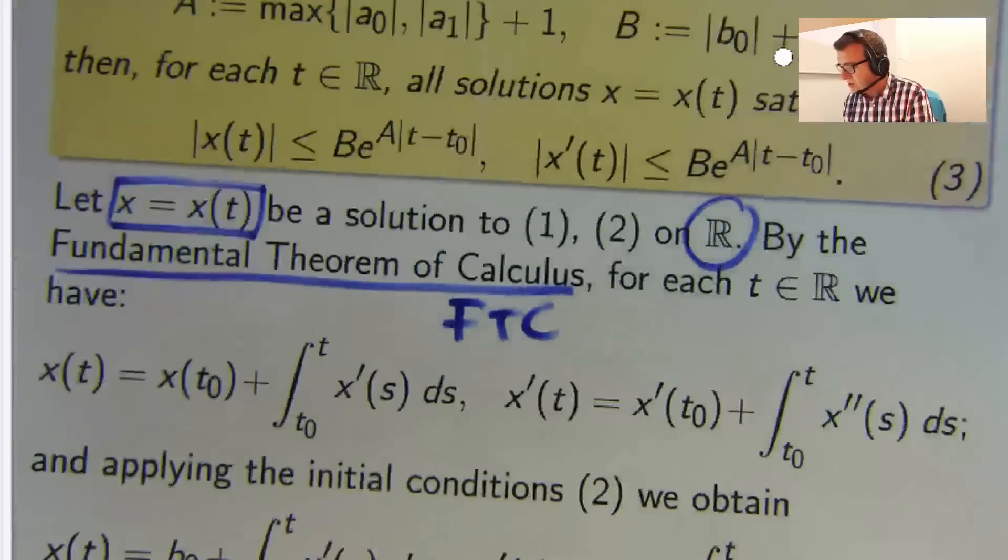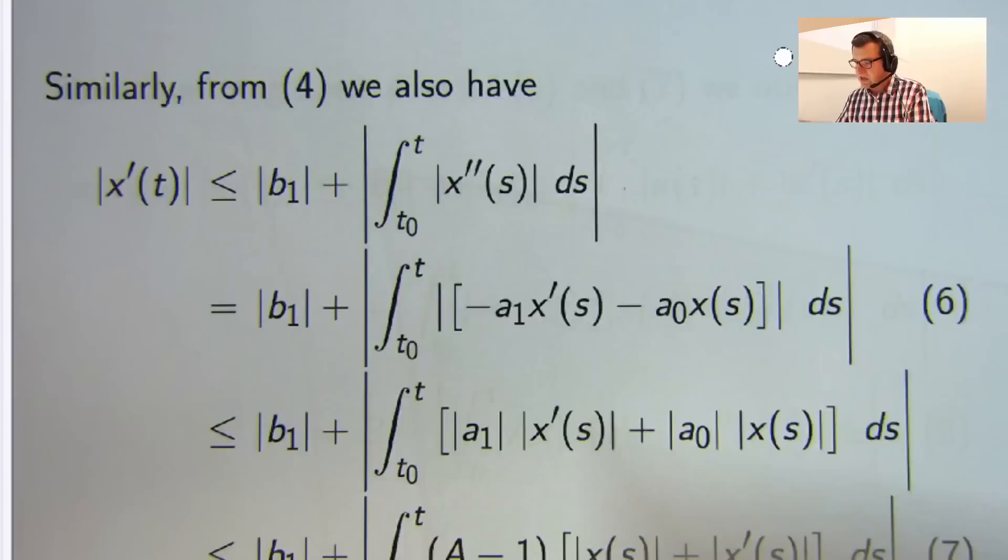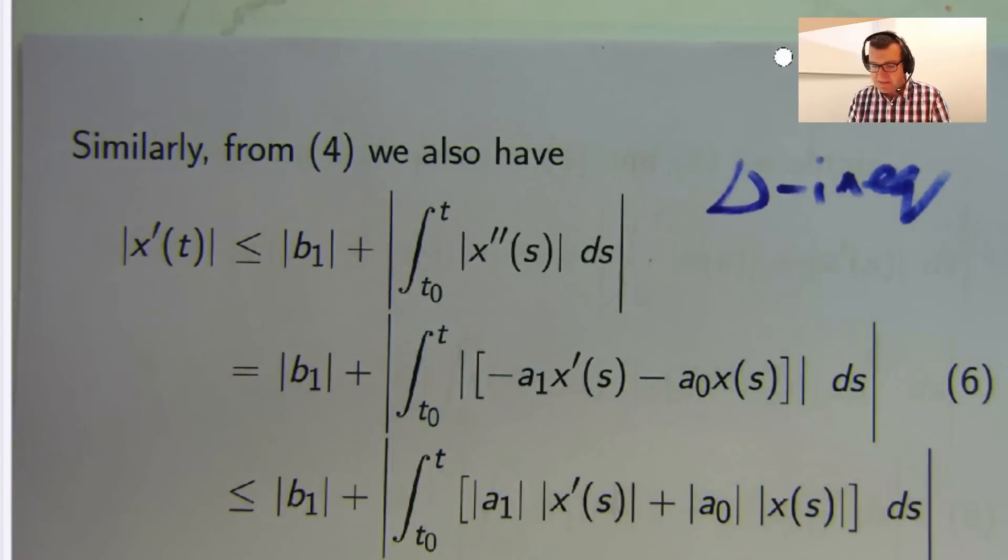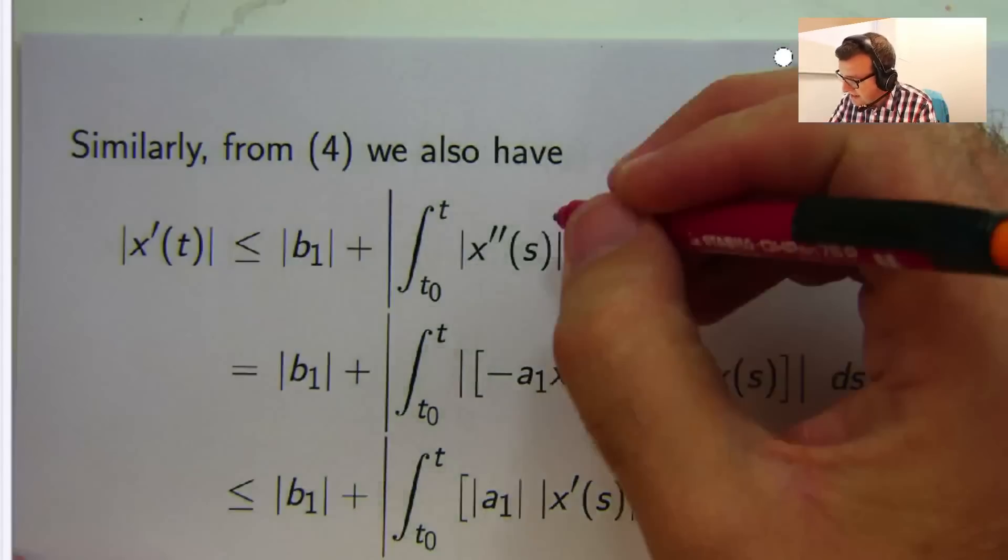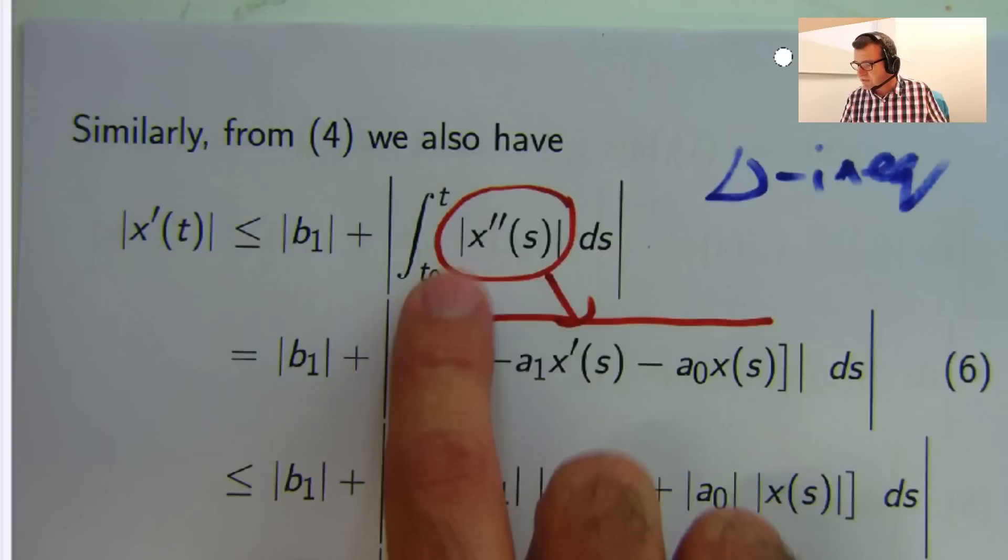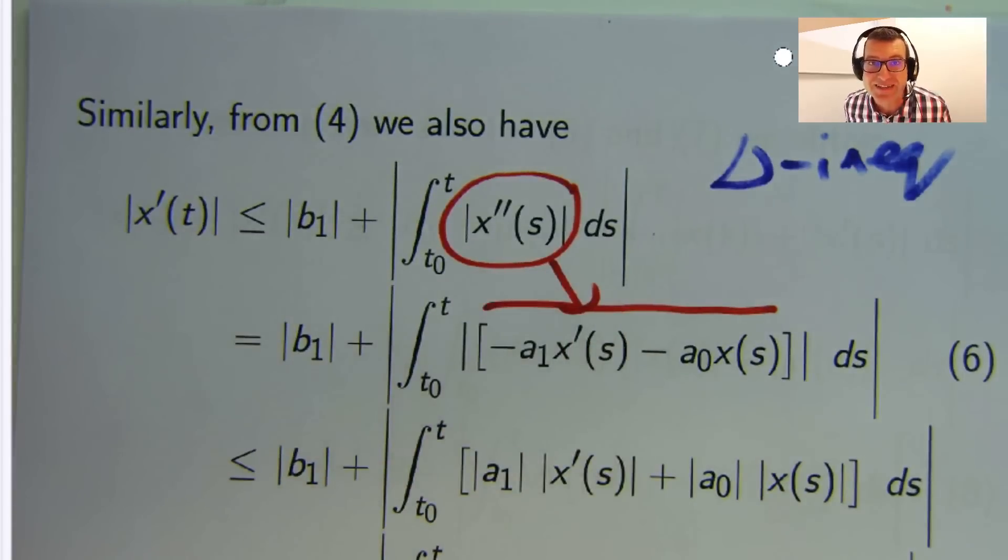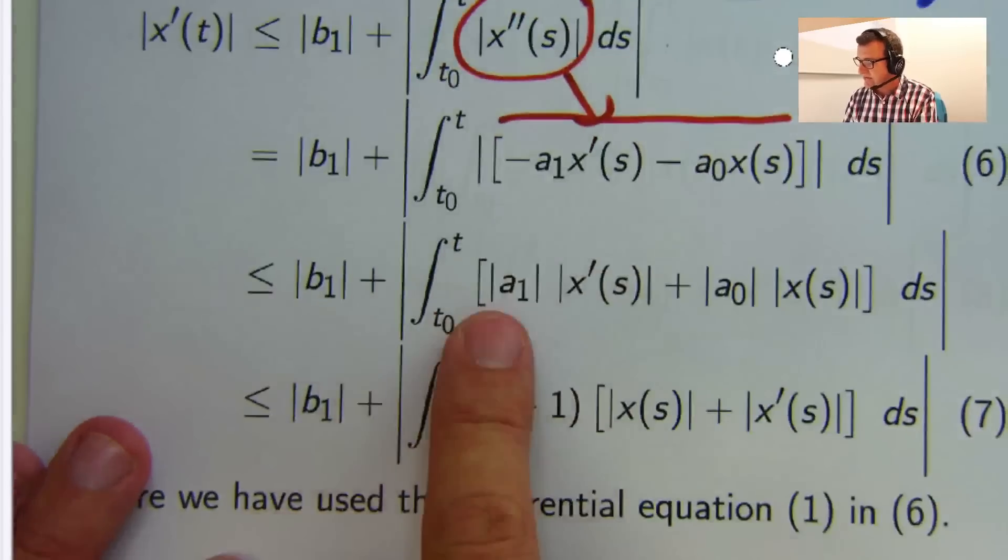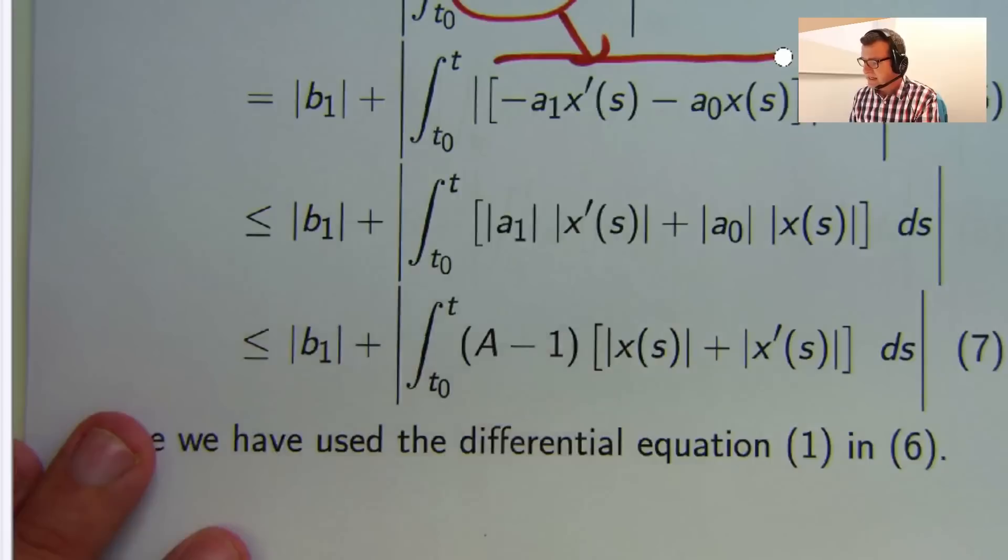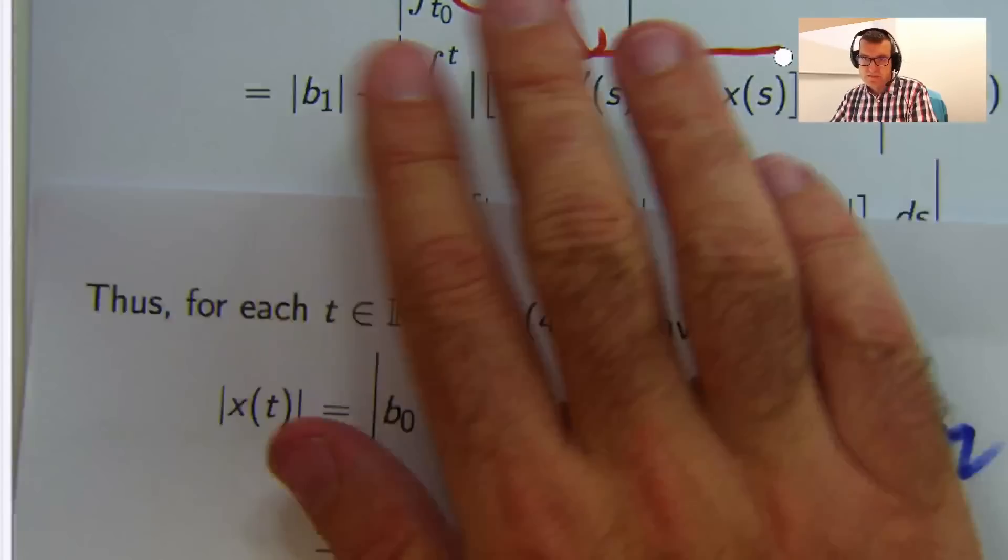Similarly, we can now work with the x prime integral equation in exactly the same way. Very similarly, again, by using the triangle inequality, we can do exactly the same thing. Now there is one difference here. What we've done is replace this using the differential equation. So basically x double prime, you can rearrange equation (1) and put these things on the other side and then replace x double prime with that. Because remember, x is a solution to (1), (2). So we do that, form an inequality again. And because of the nice way that we defined big A, we can form this inequality here. So we have two inequalities on x and x prime. We're going to add these two inequalities, both sides of them.